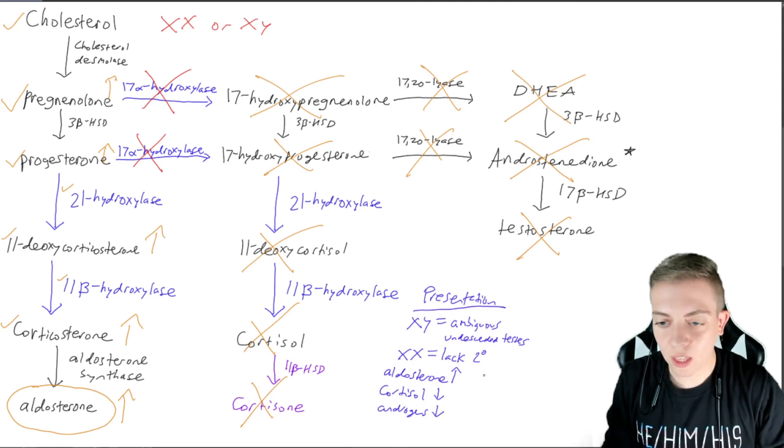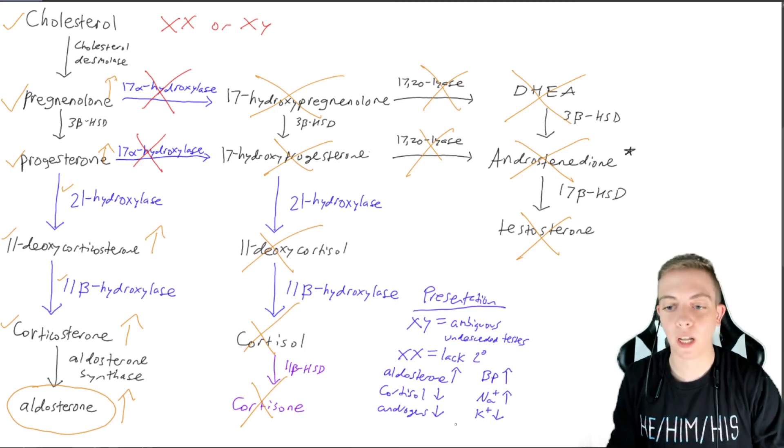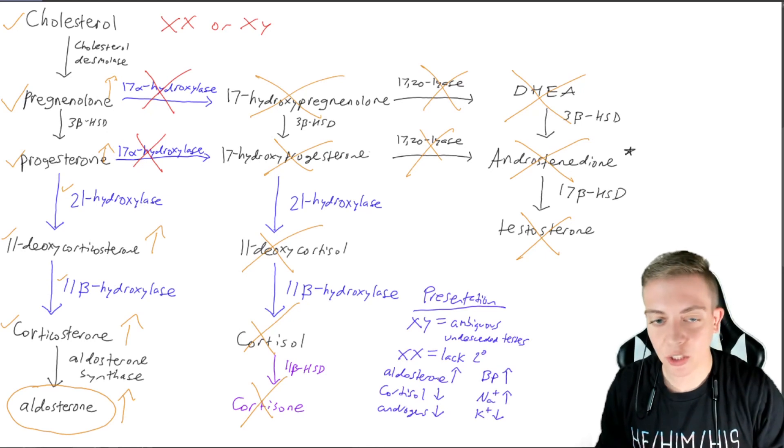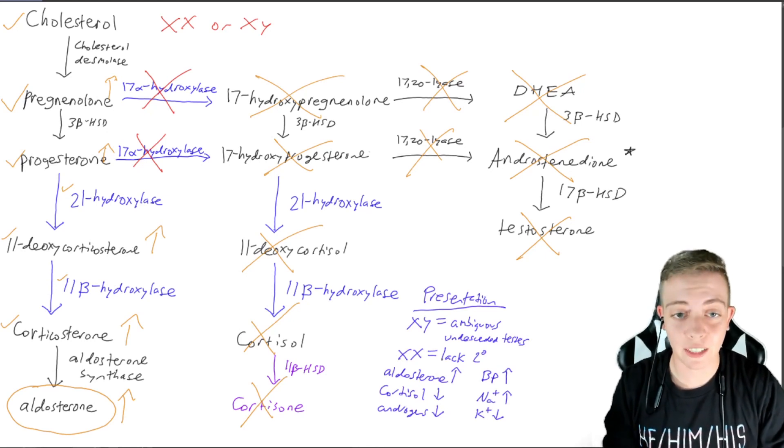And along with that, so what's going to happen to our blood pressure? Since we have high aldosterone, we're going to have hypertension, high blood pressure. And with that, we're going to have high sodium. And we're going to have, once again, similar to 11 beta hydroxylase because we have a mineralocorticoid excess, we're going to have low potassium or hypokalemia.